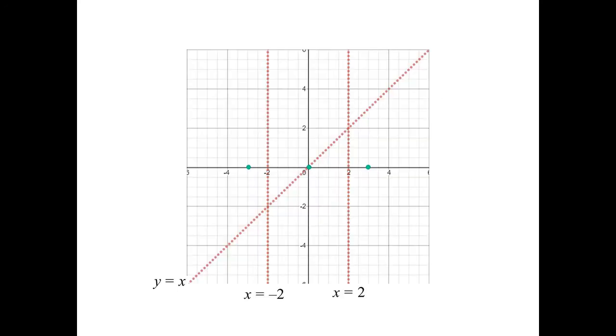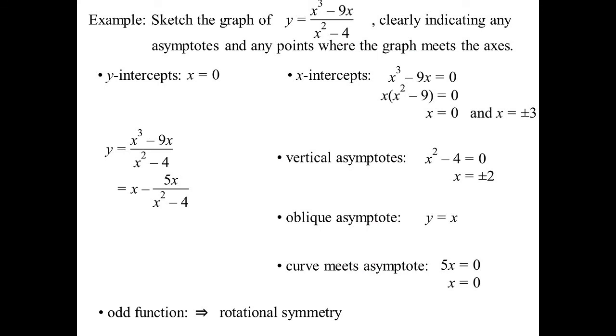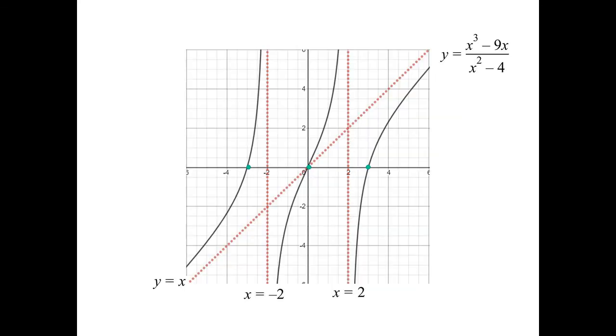We bend towards the asymptotes. It's an odd function. That's the other thing you'll notice there. So we know we've got rotational symmetry. There it is.